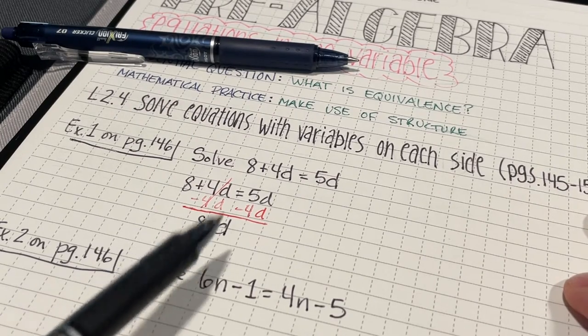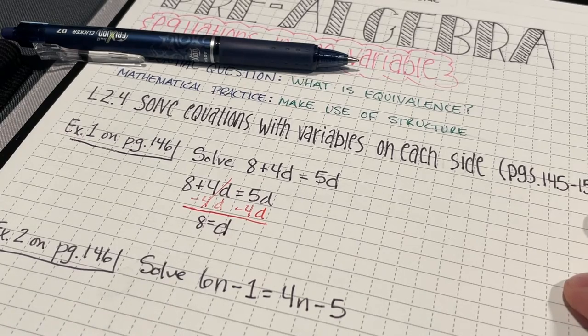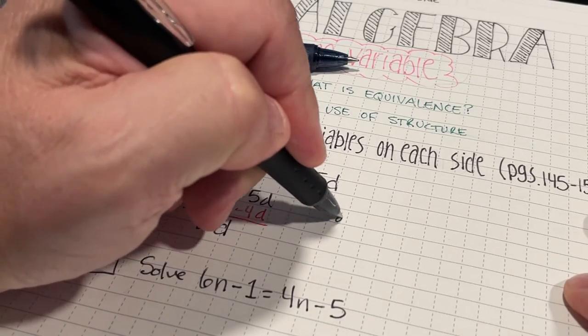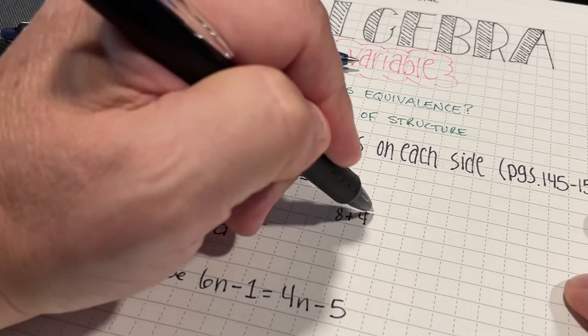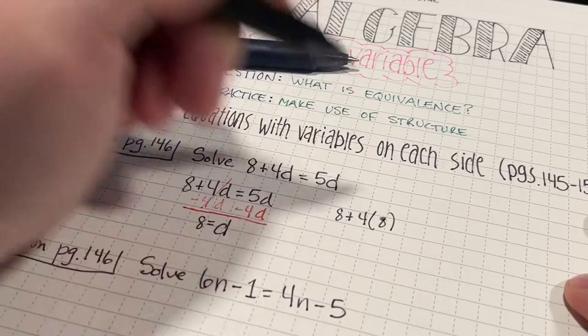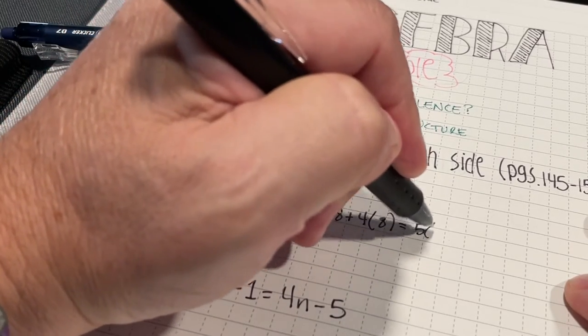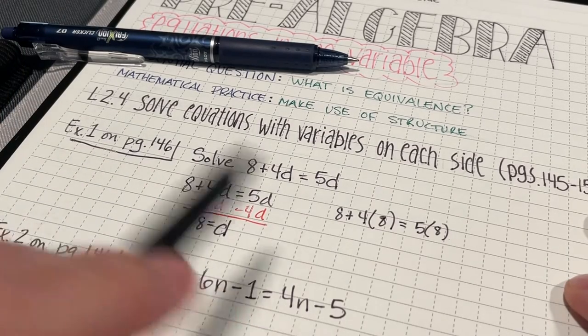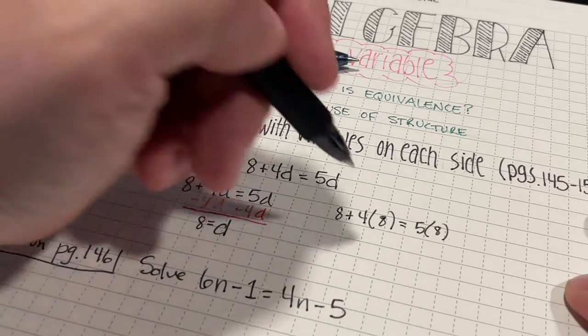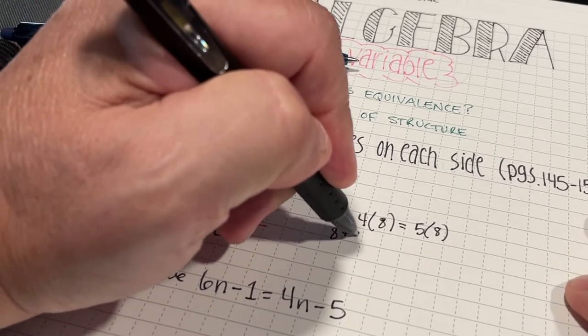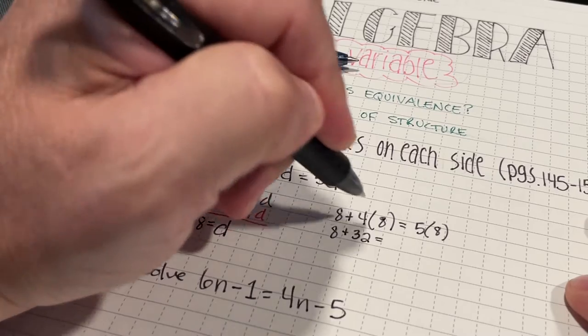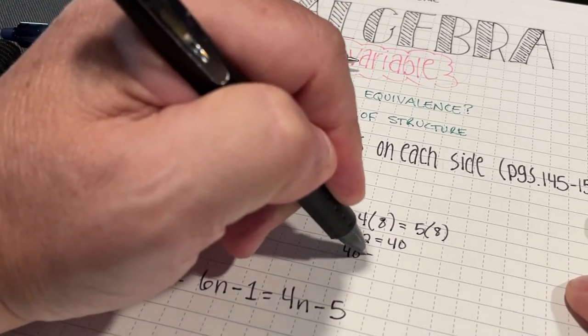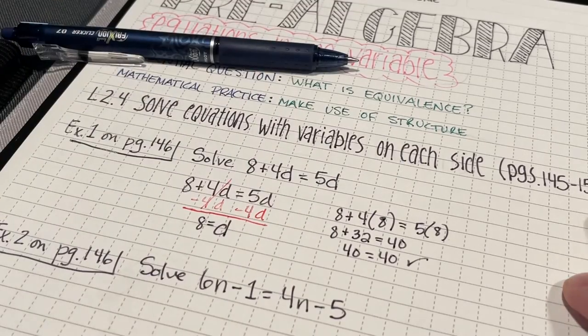Now, if I think this is true, I can check my work to see if it's a true statement, if this is a solution to it. So, if I did 8 plus 4 times 8 equals 5 times 8. So, I'm just substituting what I think d is equal to into my original equation. So, I have 8 plus 32 equals 40. And 8 plus 32 is 40. So, I have a correct solution.